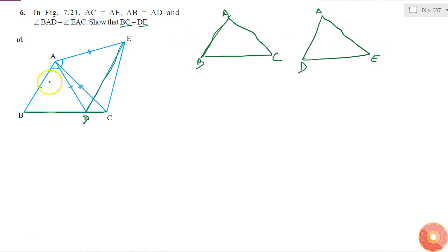What do I have here? I am given that AC is equal to AE, so this side is equal to this side. And AB is equal to AD, so this side is equal to this side. Now I got that two sides of these two triangles are equal.